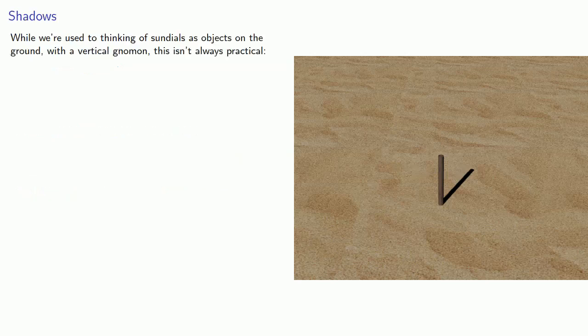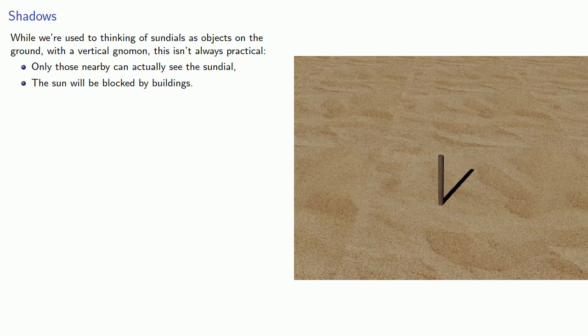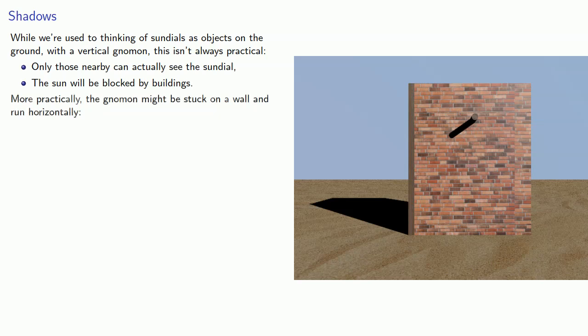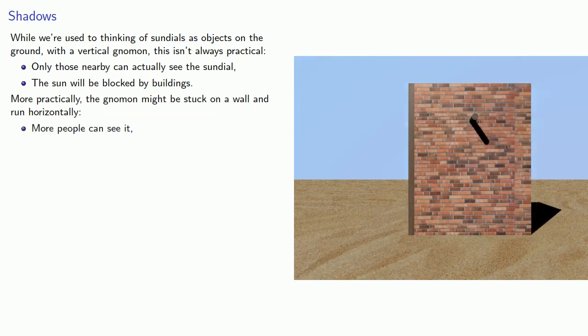While we're used to thinking of sundials as objects on the ground with a vertical gnomon, this isn't always practical. Only those nearby can actually see the sundial, and the sun will be blocked by buildings. More practically, the gnomon might be stuck on a wall and run horizontally, so more people can see it, and if it's high enough, it won't be blocked by other buildings.